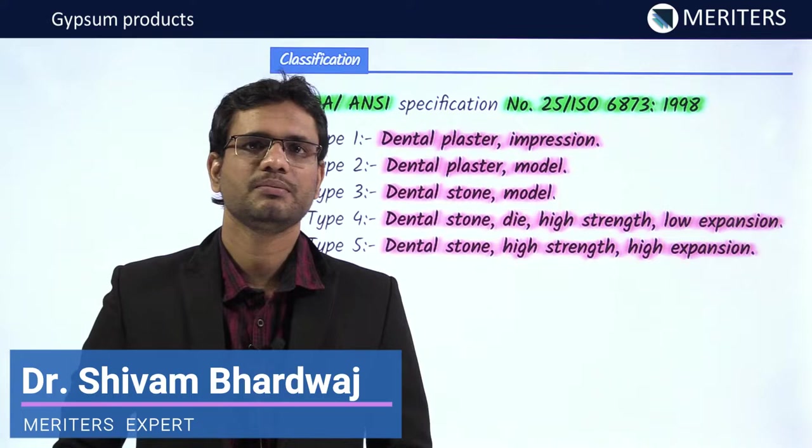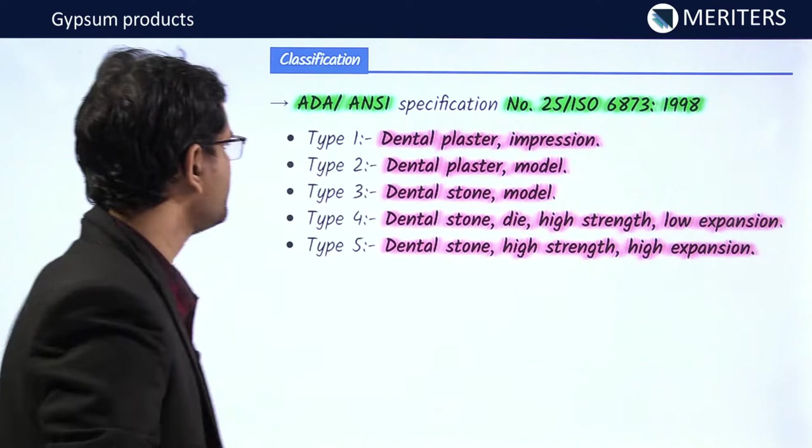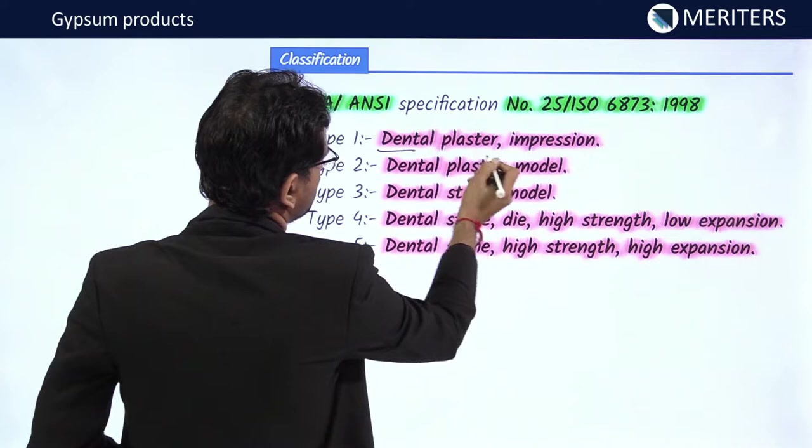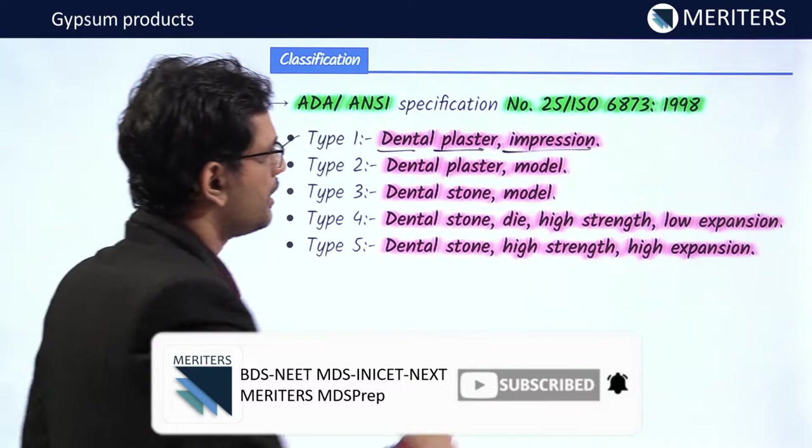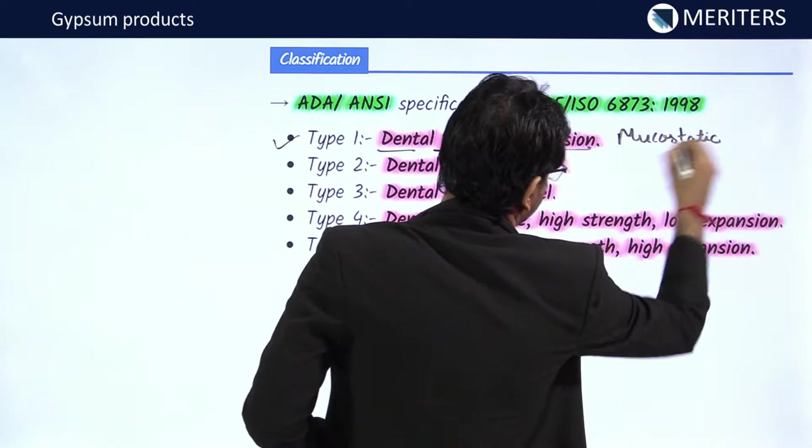In this video we will be discussing gypsum materials. First, let's start with the classification. There are five categories of gypsum materials. Type 1 is the dental plaster impression, also known as impression plaster. It is a mucostatic type of impression material.